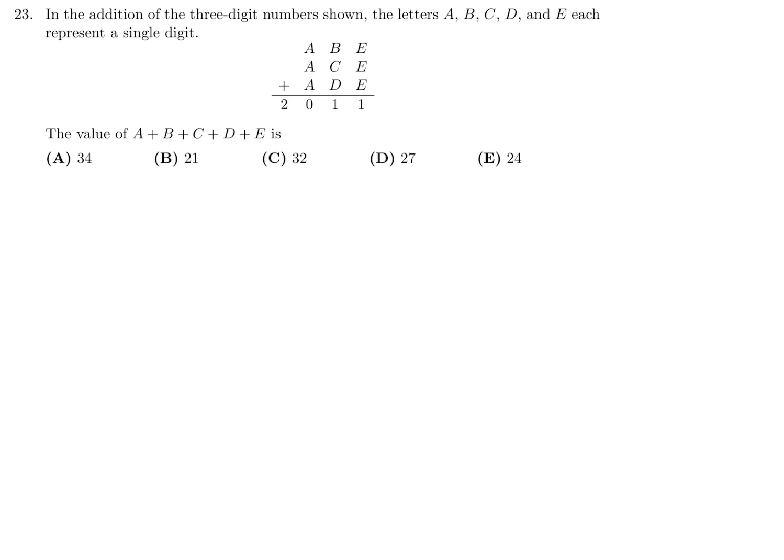In the addition of the three-digit numbers shown, the letters A, B, C, D, E each represent a single digit. The value of A plus B plus C plus D plus E is, okay, so this is something we just have to play around with.